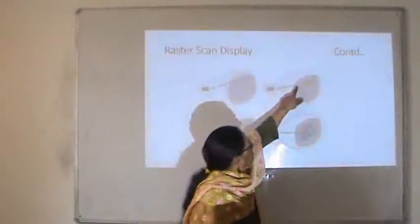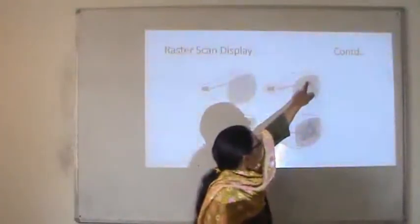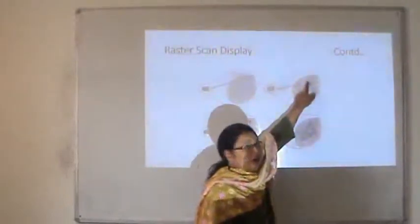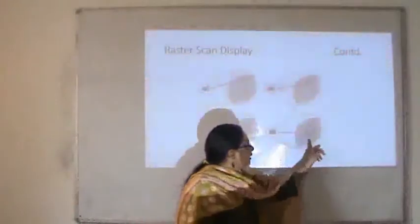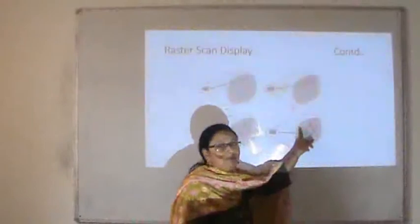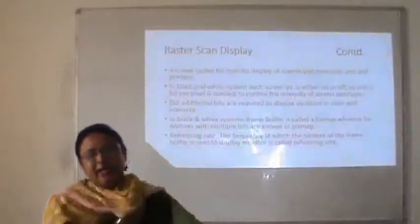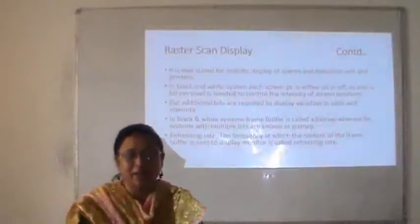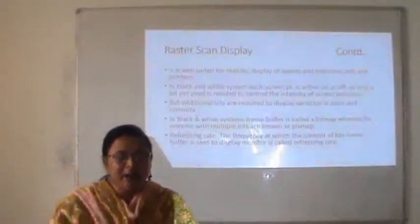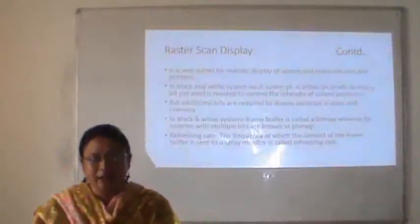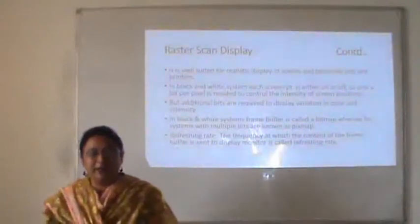If the system wants to generate a triangle, from the second row onwards it finds which pixels should be on and which should be off. It scans horizontally, and at the end it returns to the upper left corner of the screen. Raster scan is well suited for realistic display of scenes, television sets, and printers. In black and white systems, each screen point is either on or off — only one bit per pixel is needed. Additional bits are required to display variations in color and intensity. In black and white systems the frame buffer is called a bitmap, whereas systems with multiple bits are known as pixmap.